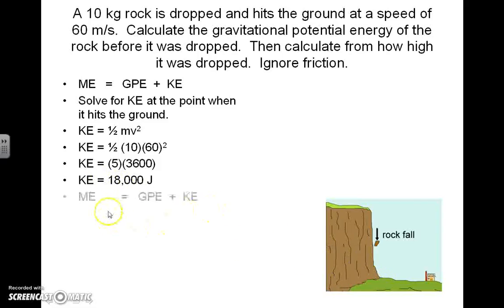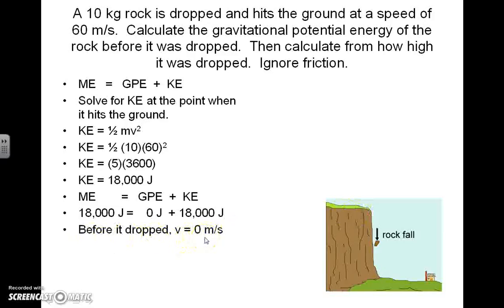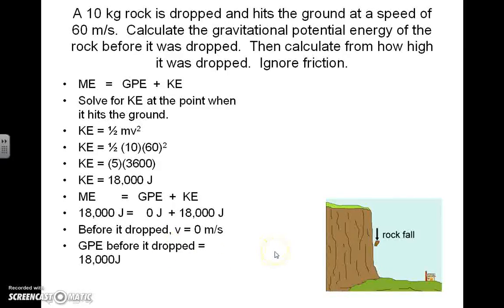That's the kinetic energy when the rock hits the ground. Before it was dropped, velocity was zero, so none of the energy was kinetic — it was all gravitational potential energy. Since we're ignoring friction, it's safe to conclude the gravitational potential energy before it was dropped was also 18,000 joules. That's one of our answers.